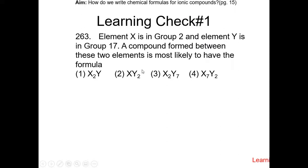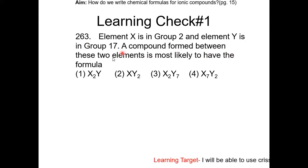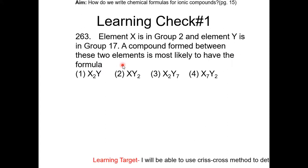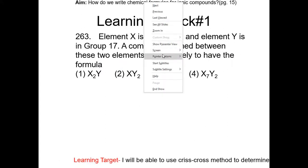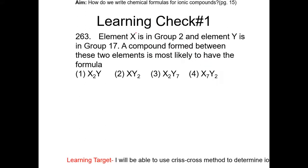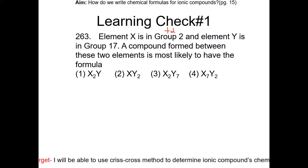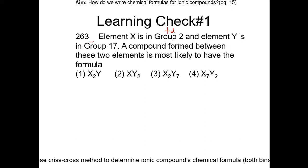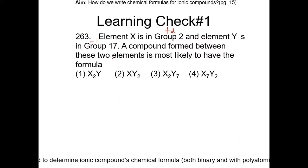Learning check: element X is in group 2, and element Y is in group 17. A compound formed between these two elements is most likely to have what formula? All the charges on group 2 are positive 2 for each element. For group 17, the charge will be minus 1 — that's the top number of each element on group 17. So when you crisscross the charges, you should get choice 2.